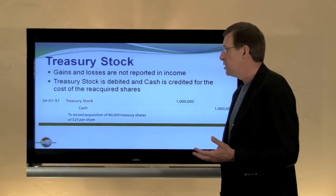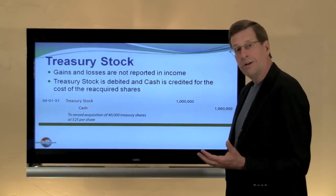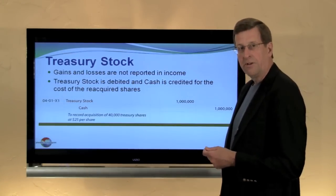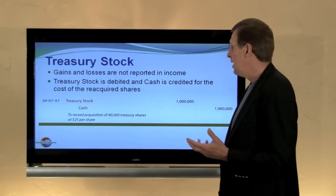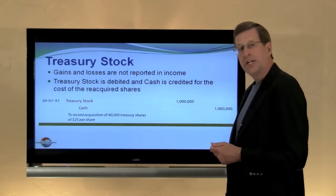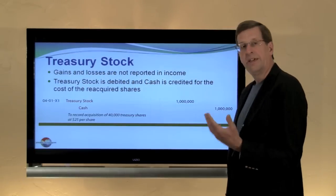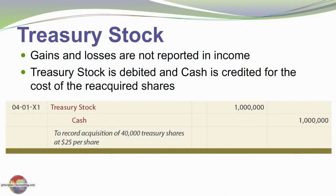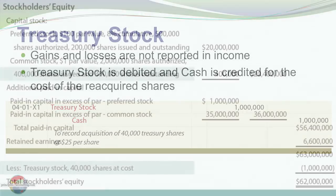When treasury stock is acquired, we debit an account called treasury stock — which is a contra equity account, as we'll see in a moment — and credit cash for the cost of the shares. Here we bought back 1 million in treasury shares: we debited treasury stock and credited cash $1 million to buy back 40,000 treasury shares at a price of $25 a share.